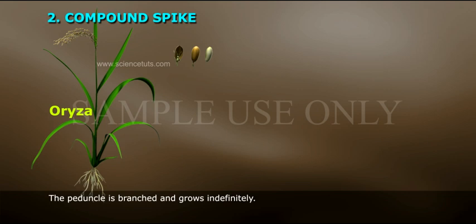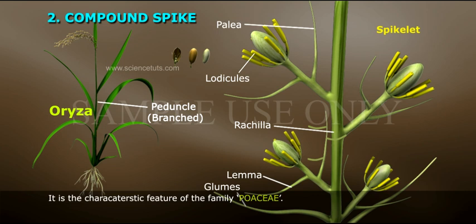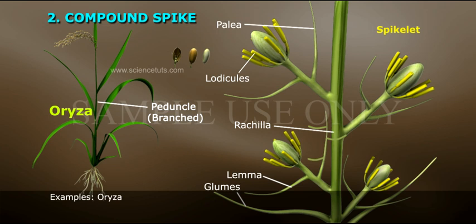Compound spike: The peduncle is branched and grows indefinitely. The branches are called spikelets. It is the characteristic feature of the family Poaceae. Example: Andropogon.